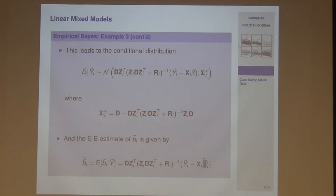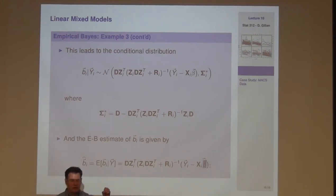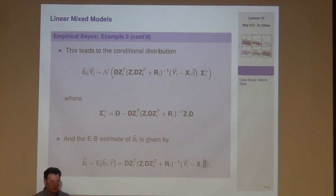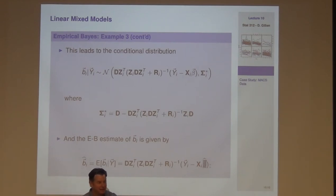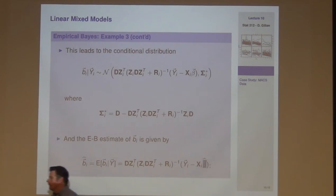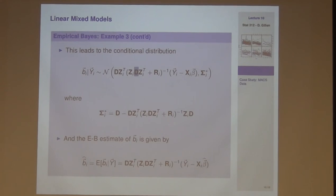One key point: students sometimes think they estimated one parameter per observation — e.g., 2,500 parameters for 500 individuals with 5 observations each. That's wrong. What you're doing is decomposing everything into D, borrowing from multivariate normal theory between the individual and the population. The data reduction is massive — it's just the parameters in D and R.